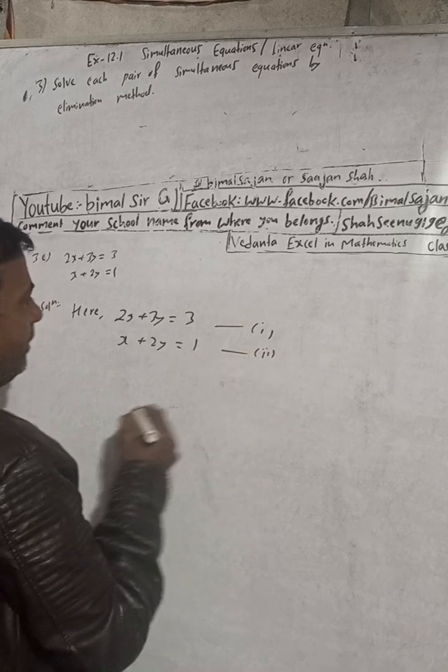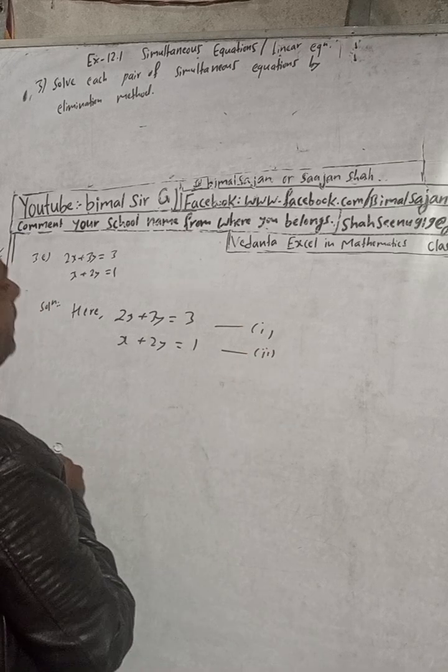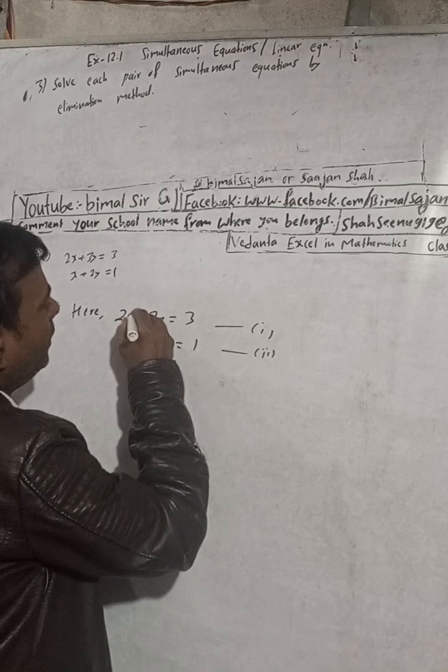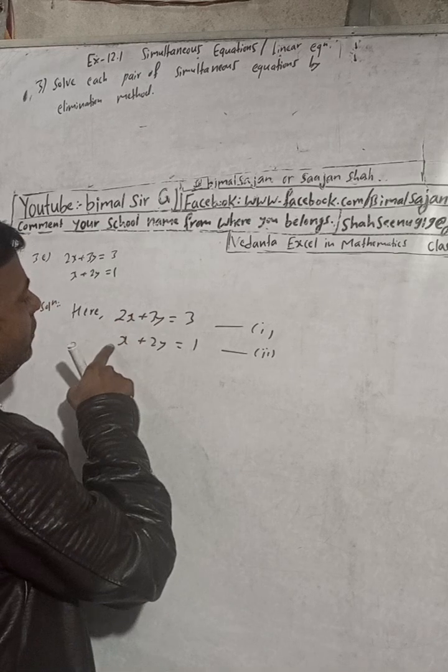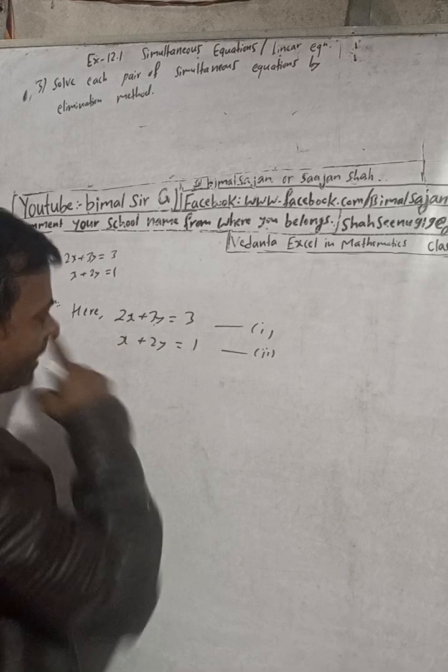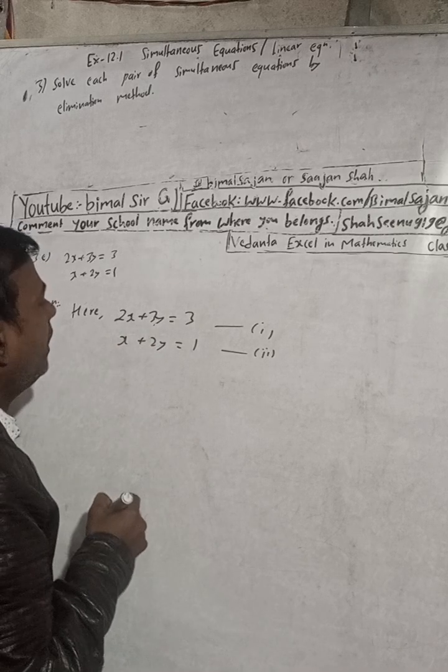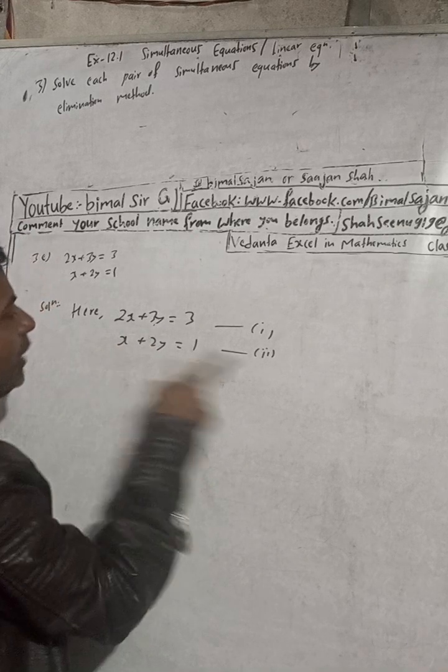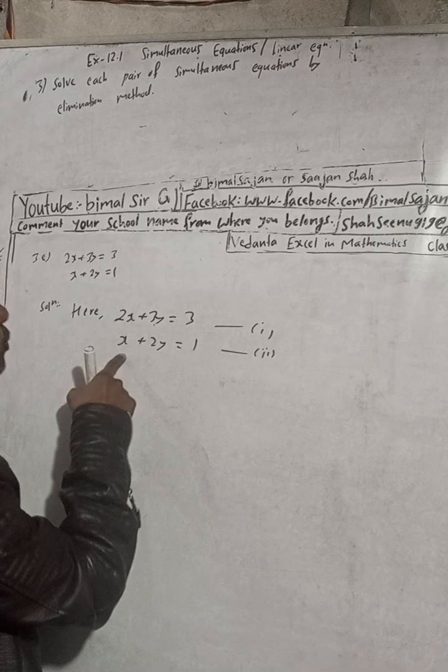Now to eliminate x and y, we have to see first coefficient. There, 2 and then 1, not same. 3 and 2, not same. So we have to make same. How can we make same? One way is that we can multiply this by 2, then we will get 2, 2.